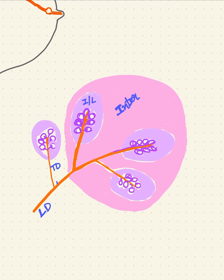This terminal duct can be divided into two parts: outside the lobule, this is called an extra lobular terminal duct. Like the stalk outside the lollipop is the extra lobular terminal duct. The stalk inside the lollipop is called the intralobular terminal duct.